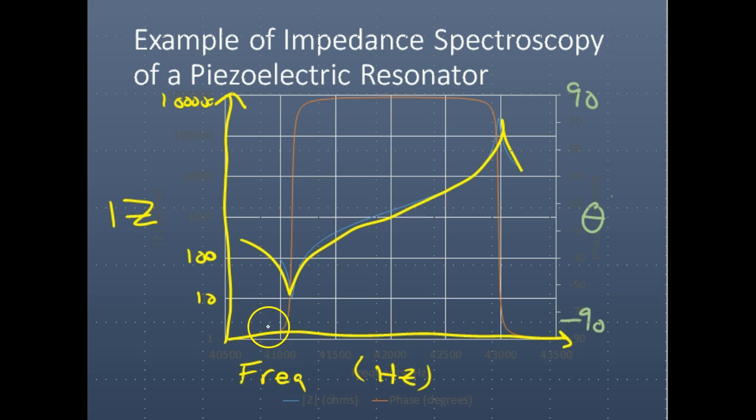The phase goes between negative 90 and 90. It begins at a low phase value, which is the capacitive type of behavior of piezoelectric material in between resonance and anti-resonance. Here we have the resonance frequency, we're going to call that FR, and we're calling the anti-resonance frequency F_anti. Just to make it clear, there are a lot of different notations, but here are some of the easiest ones: FR and F_anti.